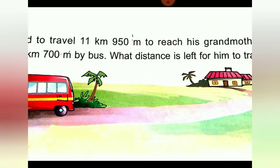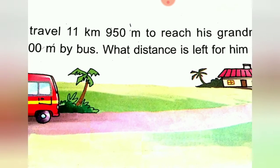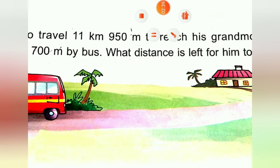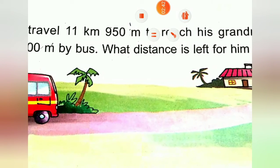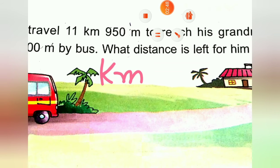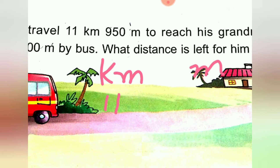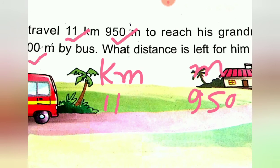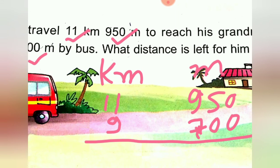In this question we have to find the distance Vikram still has to travel. First, we arrange the values in columns — a column of kilometers and a column of meters. We write eleven kilometer and nine hundred fifty meter on top, and nine kilometer and seven hundred meter below. Then we perform subtraction.